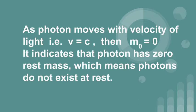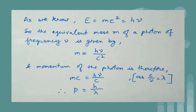As we know e is equal to mc square and also it is equal to h nu. So, the equivalent mass m of a photon of frequency nu is given by m is equal to h nu by c square and momentum of the photon is therefore, mc is equal to h nu by c. As c by nu is equal to lambda therefore, momentum p is equal to h by lambda.